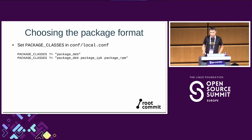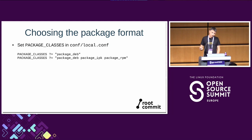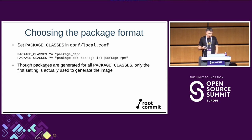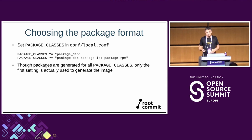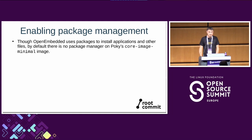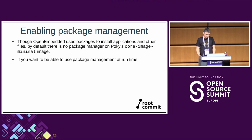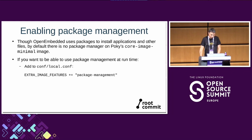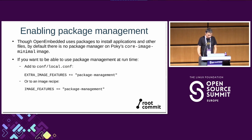To choose a package format, set PACKAGE_CLASSES in your configuration file — for example, package-deb. You can generate packages for all types, but only the first setting will be used to generate the image. You also need to enable package management, because by default you don't get it — there's no package manager binary in the image. To enable it at runtime, add 'package-management' to EXTRA_IMAGE_FEATURES (or IMAGE_FEATURES in an image recipe).